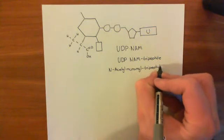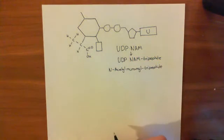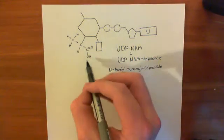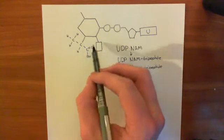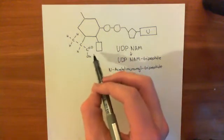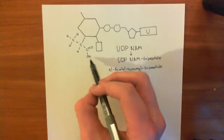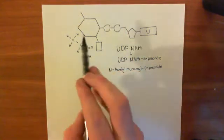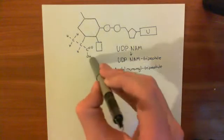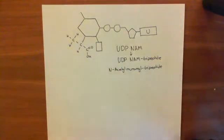We're going to add on three amino acids to this carboxyl group. We're going to use this carboxyl group as though it's the carboxyl group of an amino acid, and then extend by adding more amino acids — one, then another, then another — to create the N-acetylmuramyl tripeptide.